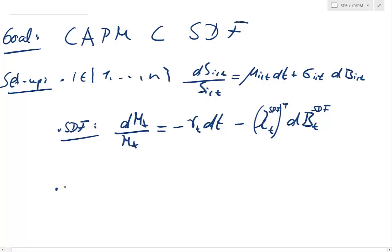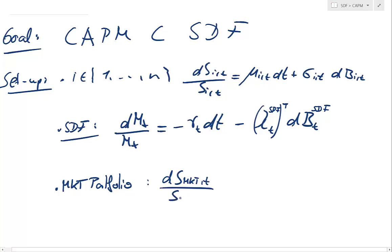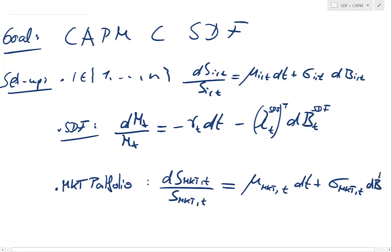One additional element is the market portfolio, because the CAPM determines expected returns of these instruments as a function of the market portfolio. I introduce that explicitly — I call it dS_market / S_market — which has a drift μ_market,t dt, a market volatility that can also be time-varying, and explicitly a market shock: the shock to the return of the market portfolio.